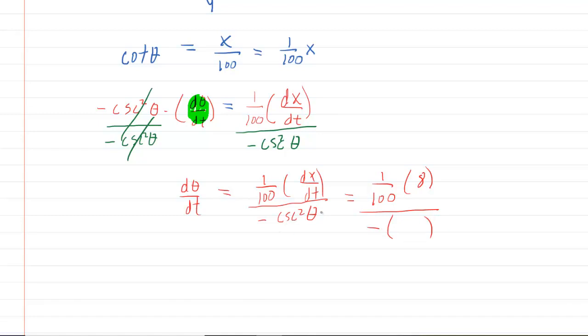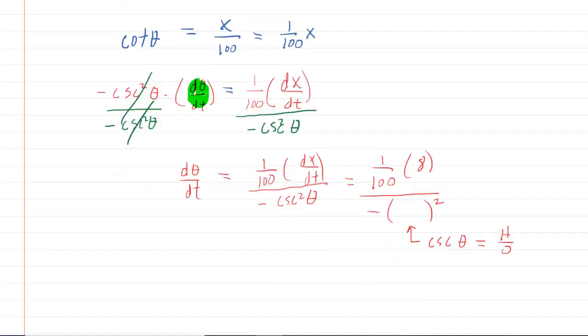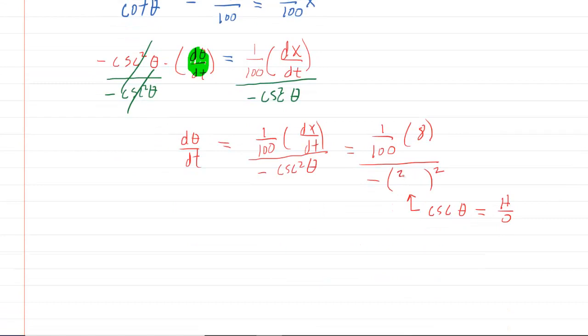So we have one one hundredth multiplied by eight divided by the negative cosecant squared of theta. When you have cosecant squared of theta, you can put the squared outside. We remember that the cosecant of theta is the reciprocal of sine, so instead of being opposite over hypotenuse, it's hypotenuse over opposite. We go back to our diagram, and the hypotenuse was 200, and the opposite was 100.